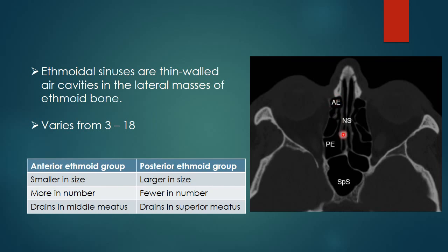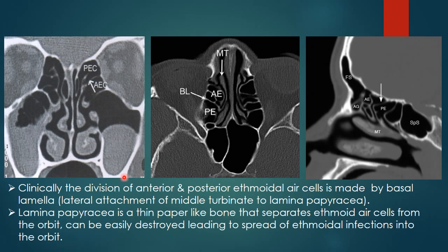You can see the anterior ethmoid sinus, which is small, and the posterior ethmoid, which is large. Clinically, the division between anterior and posterior ethmoid air cells is made by the basal lamella. The middle turbinate is attached to the medial wall of the orbit through this structure called the basal lamella, which is the division between anterior and posterior ethmoid cells. The ethmoid cells anterior to the basal lamella are anterior ethmoid cells, and those posterior to it are posterior ethmoid cells. This can also be seen in the axial CT and sagittal images showing the middle turbinate attached to the orbit through the basal lamella.